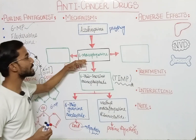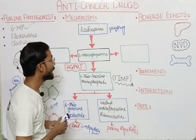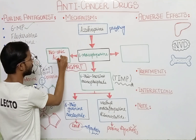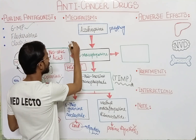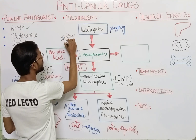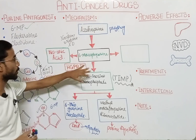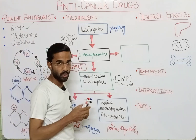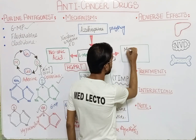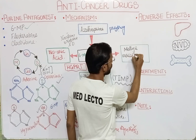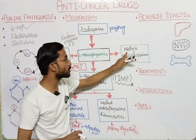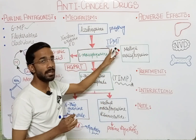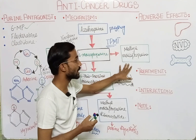6-Mercaptopurine also has two other pathways. It can go towards thiouric acid, which is formed by the enzyme xanthine oxidase — converting 6-mercaptopurine into thiouric acid, which can then be excreted from the body. 6-Mercaptopurine can also convert into methylmercaptopurine with the help of the enzyme TPMT — thiopurine methyltransferase — and those compounds can also be excreted.